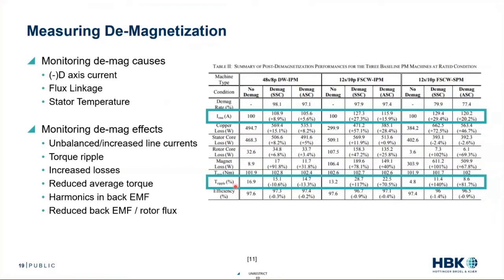We could also see torque ripple. We have an increase or decrease of 10% torque ripple in this given configuration, and an increase of 100% or 70% torque ripple in these other two. These are things we can pick up on really easily from a measurement perspective.